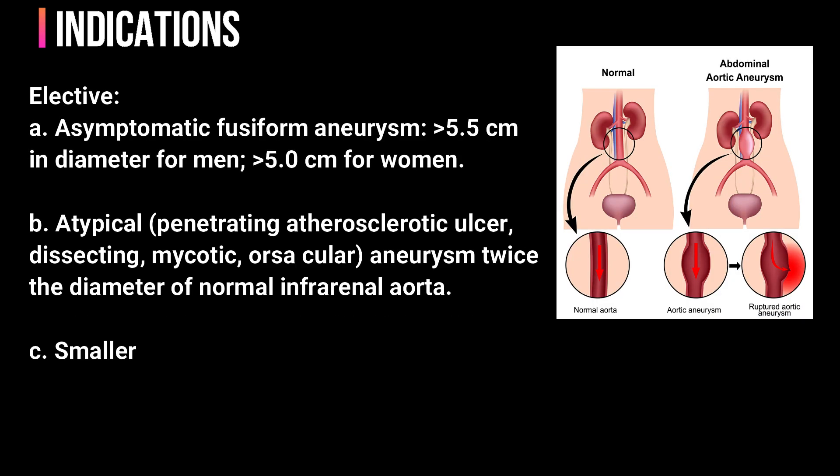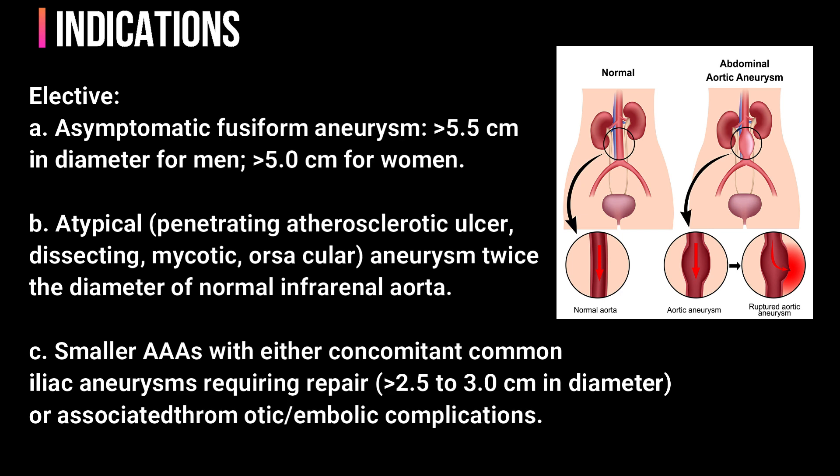The elective indications include: A) asymptomatic fusiform aneurysm; B) atypical aneurysm twice the diameter of normal infrarenal aorta; and C) smaller abdominal aortic aneurysms with either concomitant common iliac aneurysms requiring repair, or associated thrombotic or embolic complications.